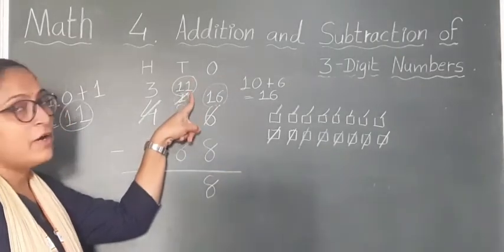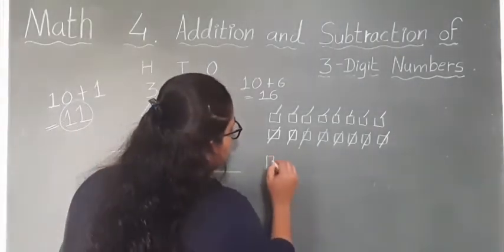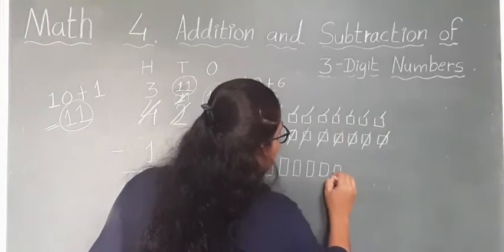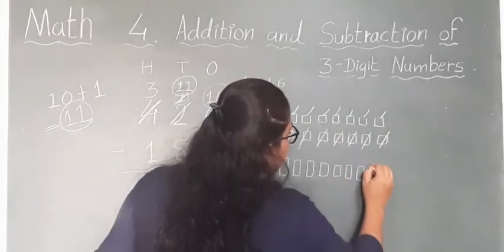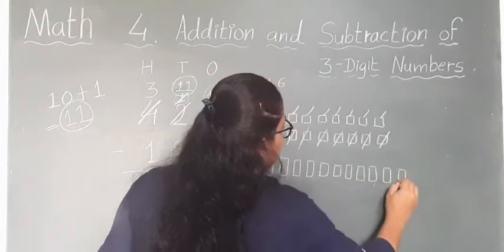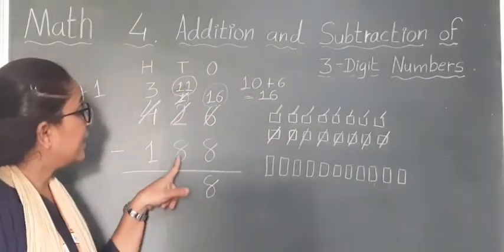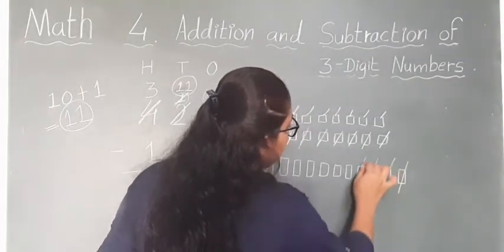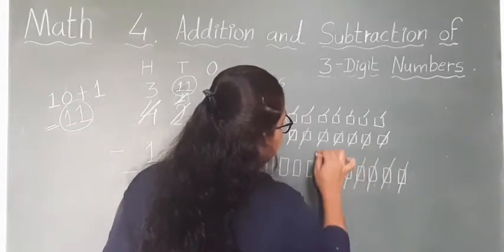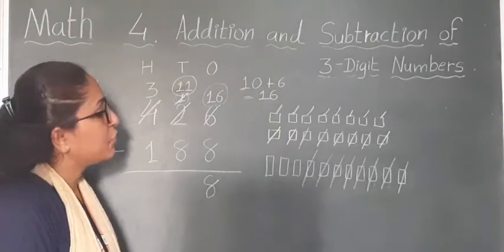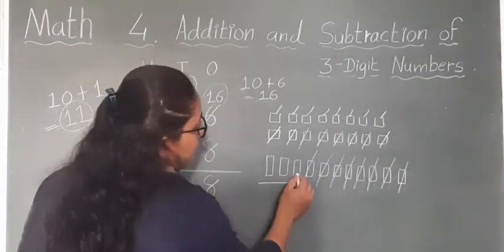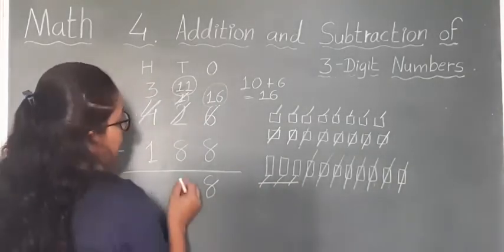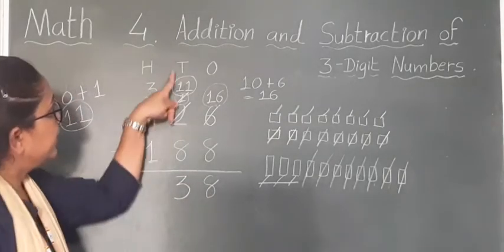I am going to draw strips of 10s: 1, 2, 3, 4, 5, 6, 7, 8, 9, 10 and 11. Now we have to subtract 8 strips of 10s: 1, 2, 3, 4, 5, 6, 7 and 8. Now count the remaining strips: 1, 2, 3 — three strips of 10s remaining. So we have to write down 3 in the 10s column.